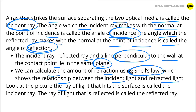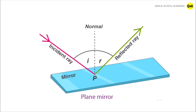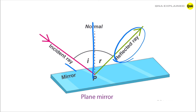Look at the picture — the ray of light that hits the surface is called the Incident Ray. The ray of light that is reflected is called the Reflected Ray. Here, this is the Incident Ray, this is the Normal, and this is the Reflected Ray.